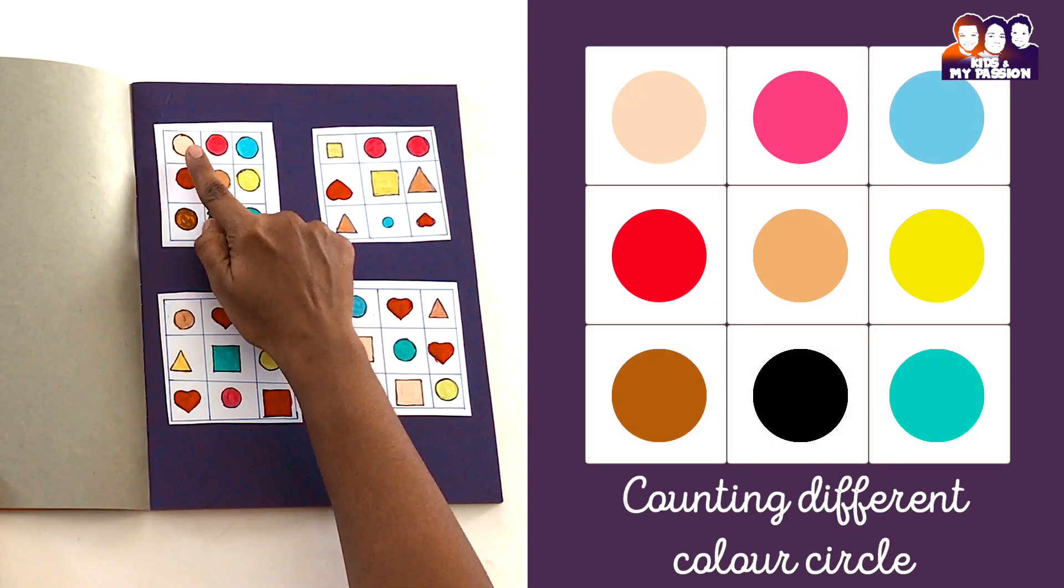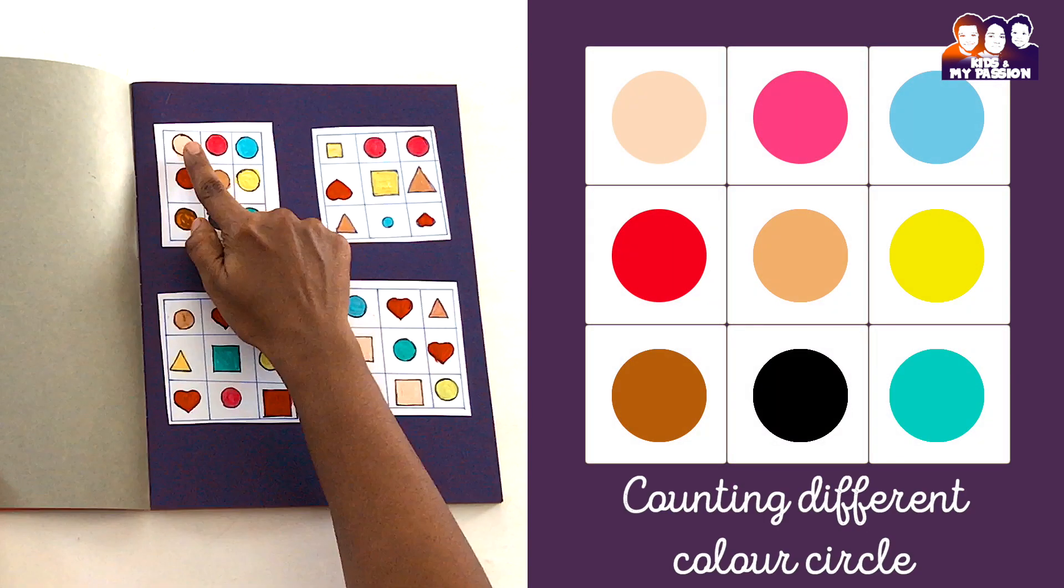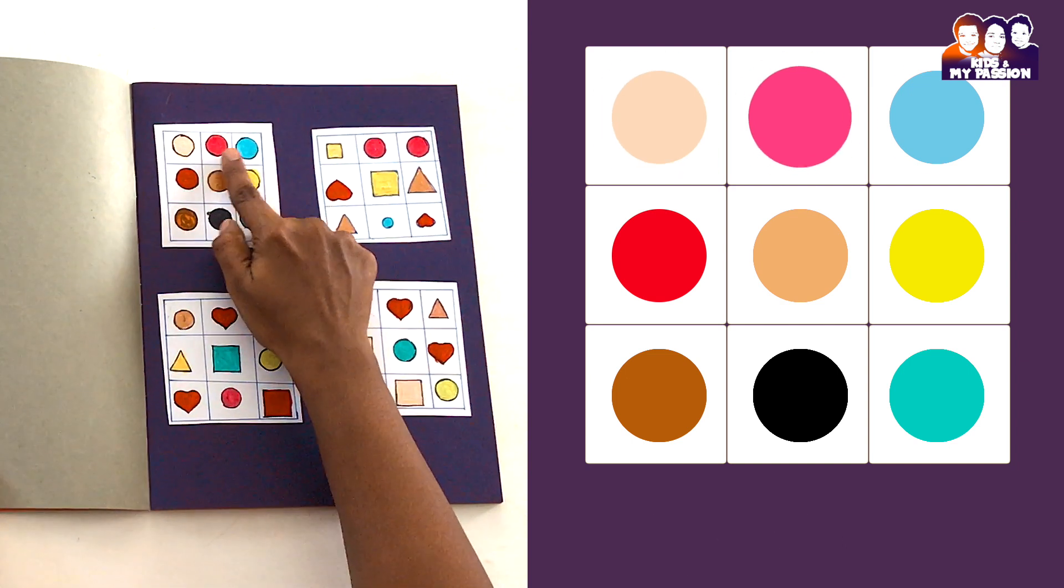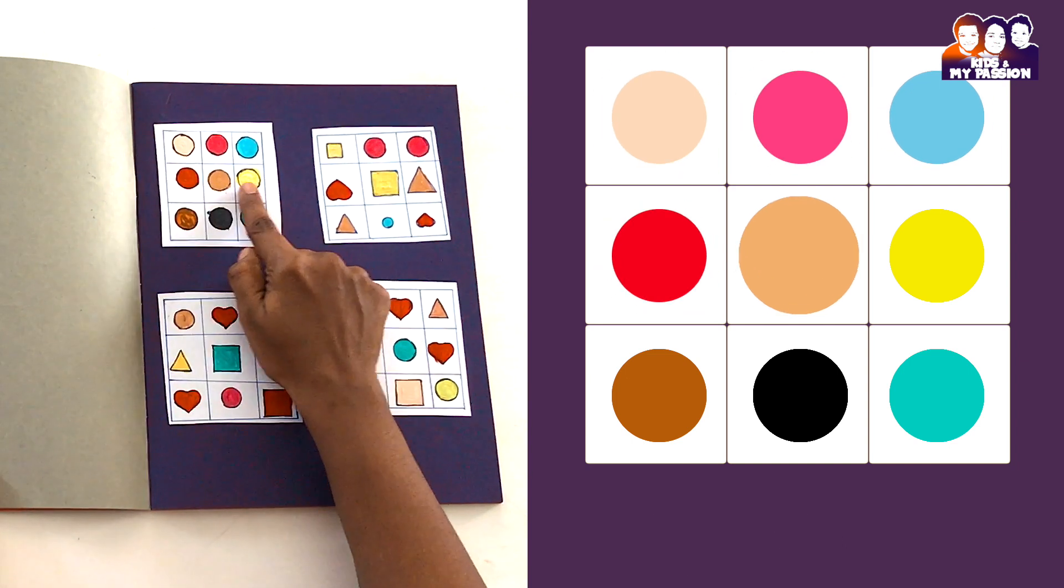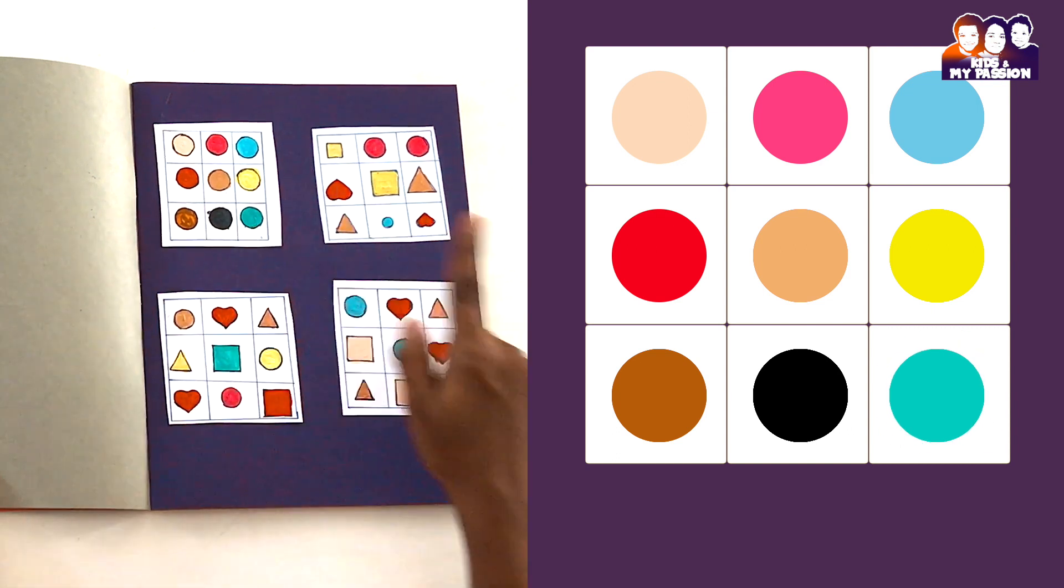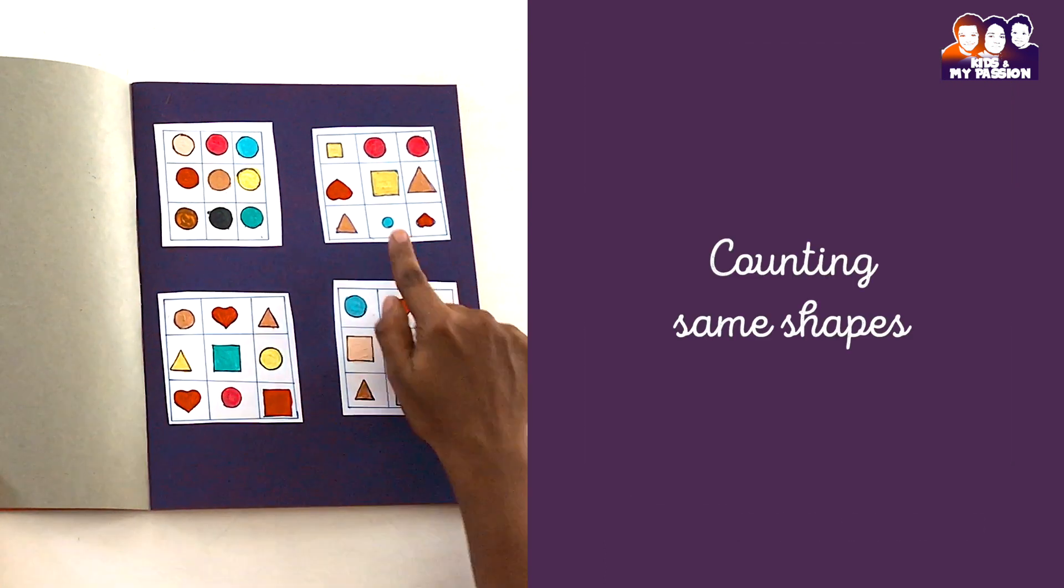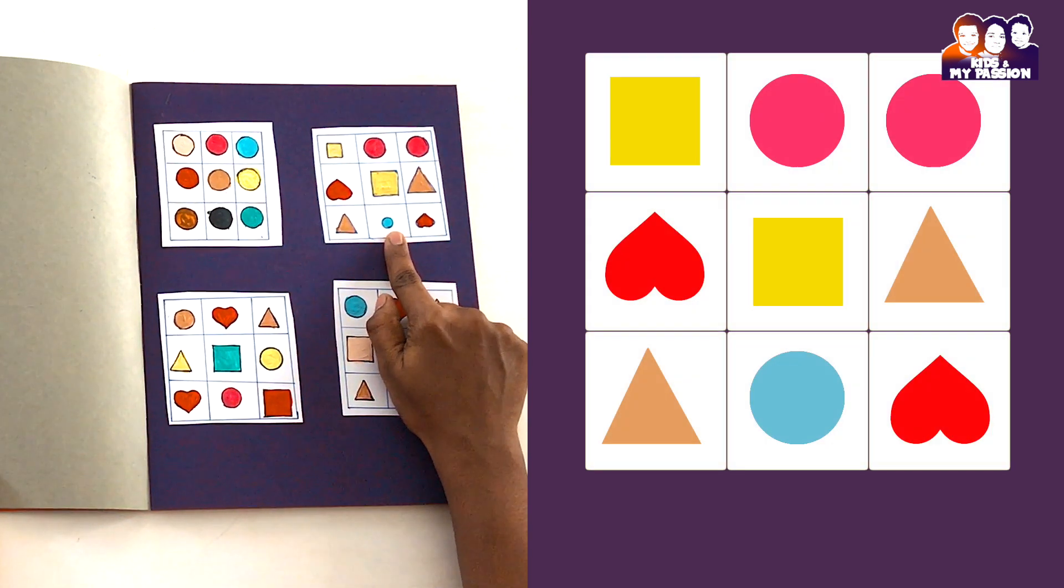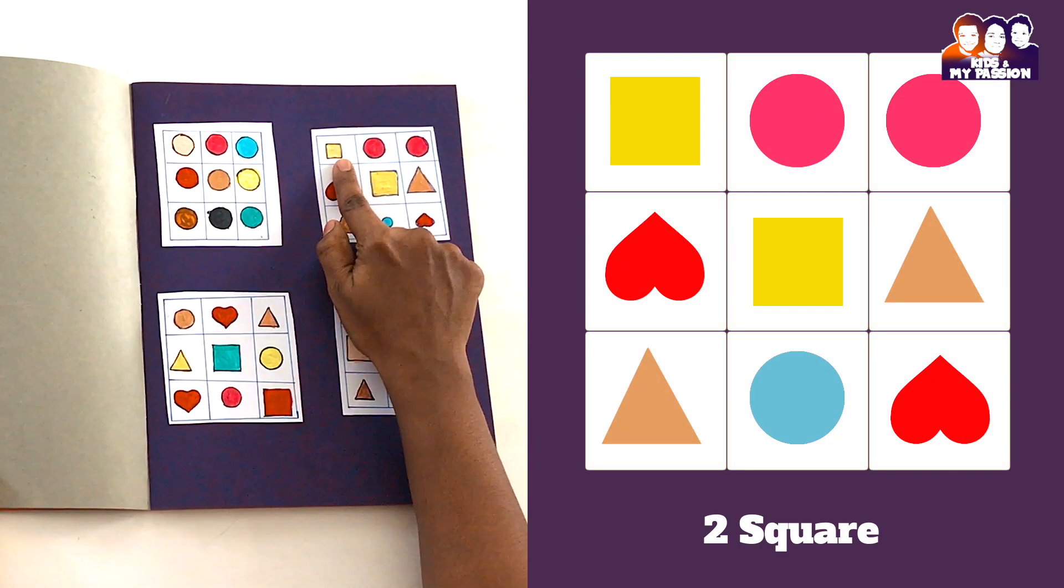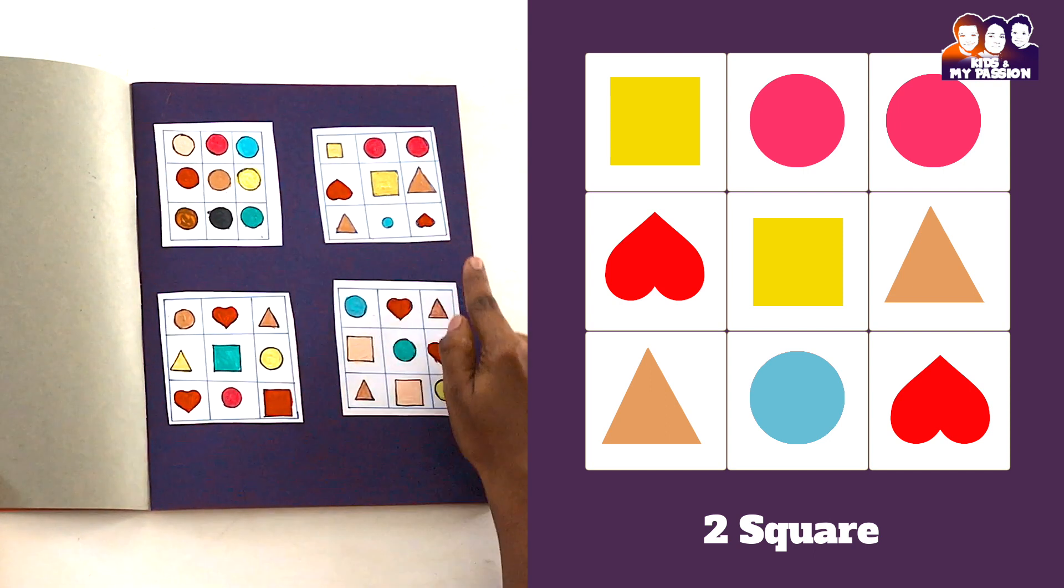Tell them to identify the color circles: one, two, three, four, five, six, seven, eight, nine. Second picture: counting same shapes. Two squares, two hearts, three circles, three circles, two triangles.